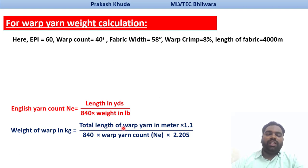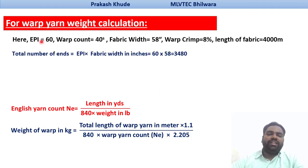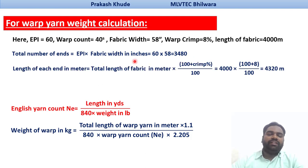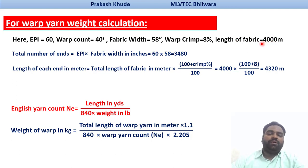Now in this case I need the total length of warp yarns. Before that we need to know how many warp yarns are there in the fabric. That can be found by: if we know the ends per inch is 60, and multiply it by the fabric width, we get the total number of warp yarns, which is 3480. Another term we need to know is the length of each end in meters. Assuming the length of fabric is 4000 meters, at least 4000 meters length of each end will be there.